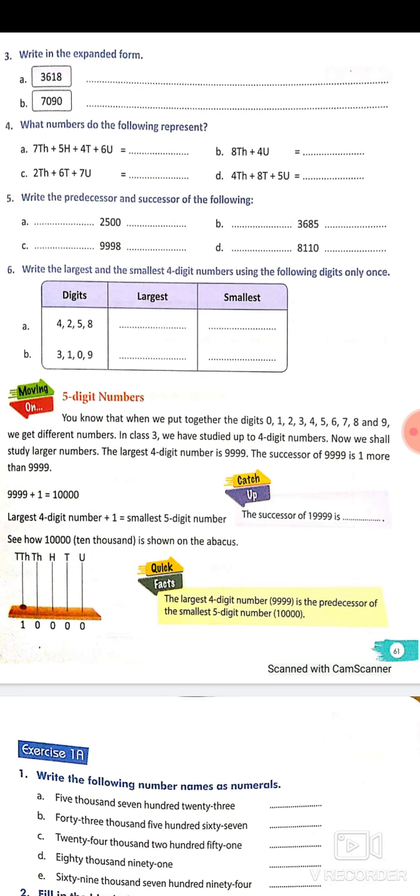Now the largest 4-digit number is 9,999. If we add one to 9,999, we will find another number. Then what will it be? 10,000.